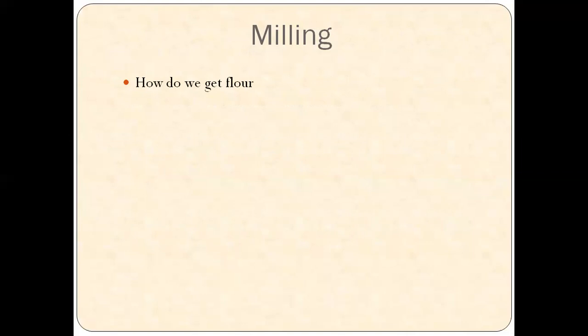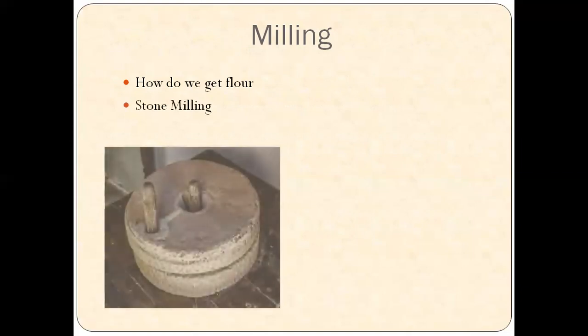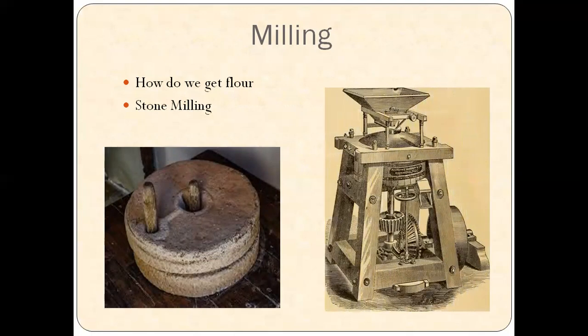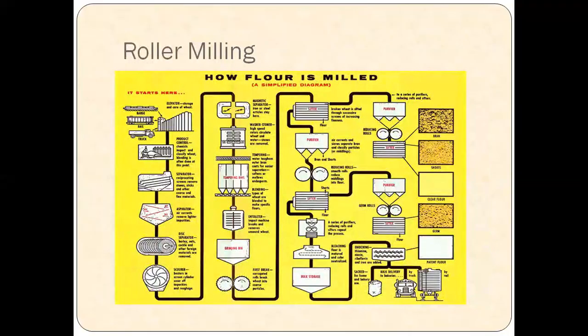Once the grain is available to us, it is milled to obtain flour. The first type of milling is stone milling — the age-old process used to obtain flour, which with the upgradation of technology can now be milled with less effort. The second type is roller milling, which is a mechanical process. Once the berry is put into the machine, various processes such as cleaning, sorting, conditioning, gristing, and removing of the bran and the germ take place. Further, only the endosperm is ground to obtain refined flour. Let's have a look at a video on milling.